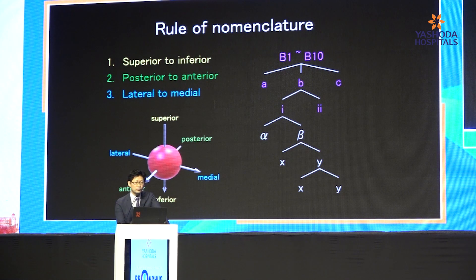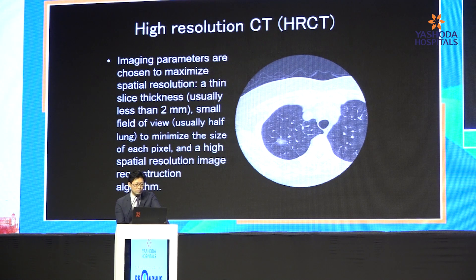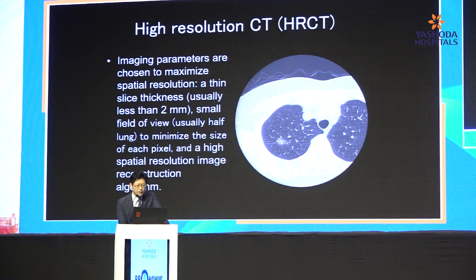From CT data, we need to identify to the fourth generation, but we need a high-resolution CT to identify the bronchial tree precisely. HRCT — the definition is imaging parameters are chosen to maximize spatial resolution. For example, usually slice thickness, thinner is better, usually less than two millimeters. We usually use 0.5 millimeter slice thickness, and a small field of view is better.